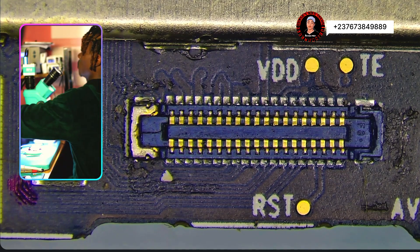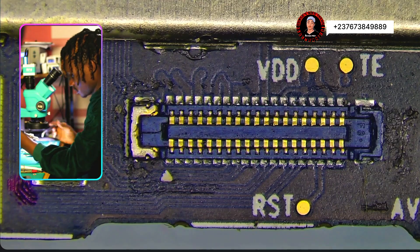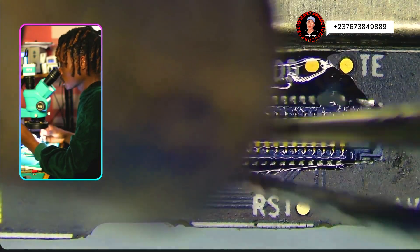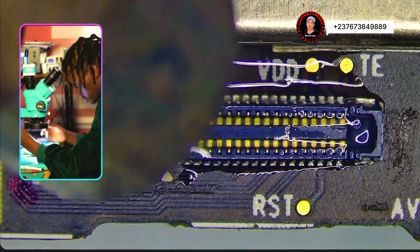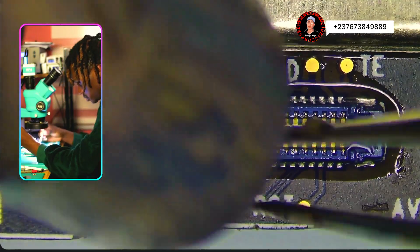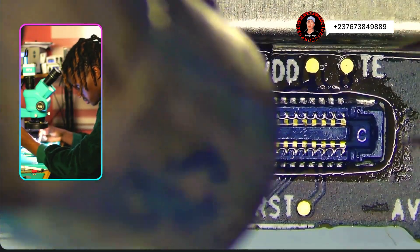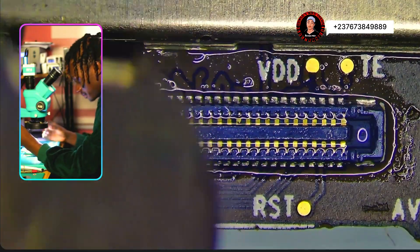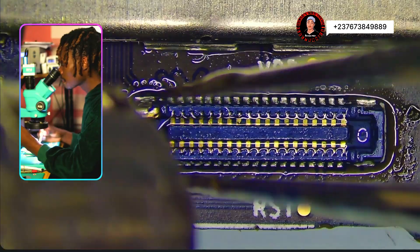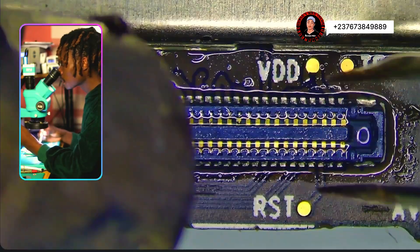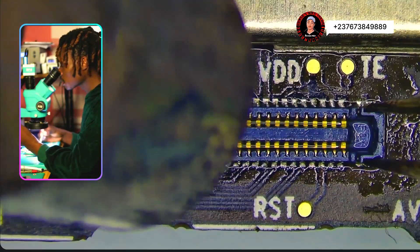When you see this type of stuff, make sure that you remove it. Just remove it and put it back in a correct way before you go further with troubleshooting. You might jump into the mobile PCB and start changing ICs like the display ICs, meanwhile the problem is not from that section.